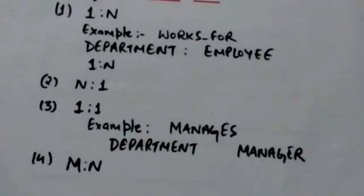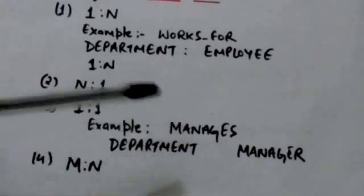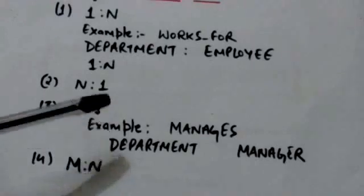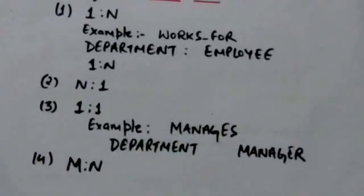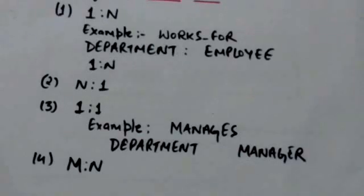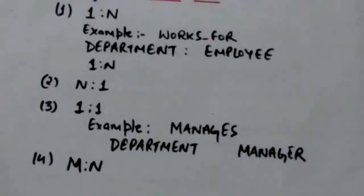For example, the binary relationship 'manages' relates one department entity to the manager who manages that department. A manager can manage only one department, and a department can have only one manager. Therefore, a department entity is associated with at most one manager entity, and a manager entity is associated with at most one department entity.